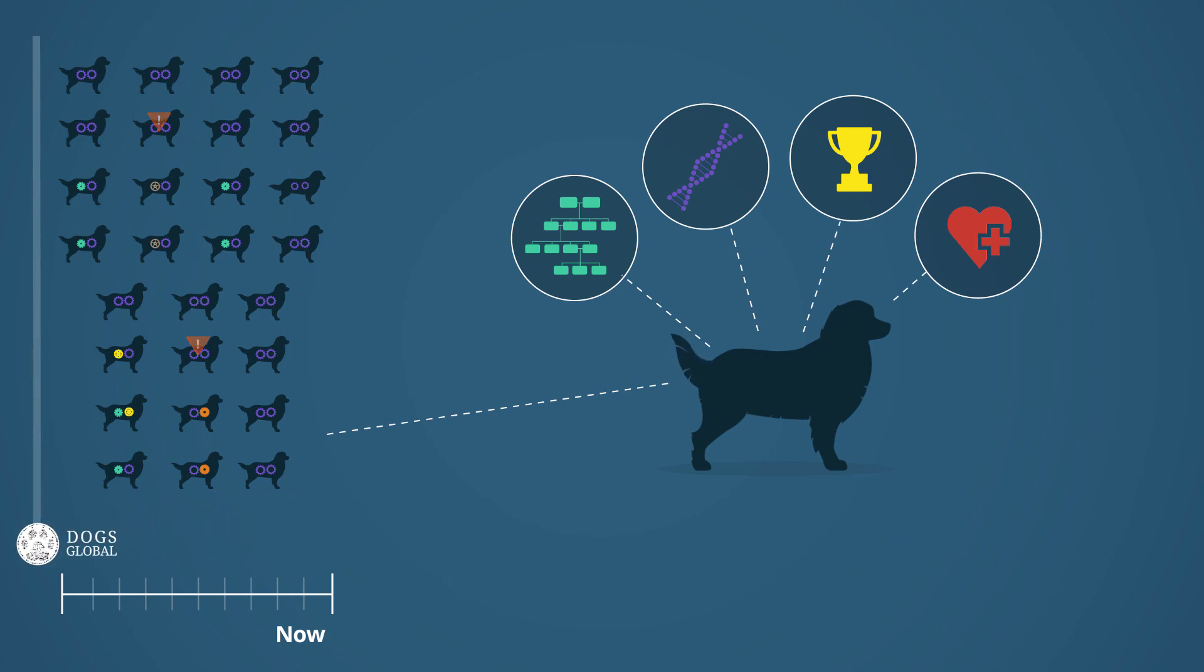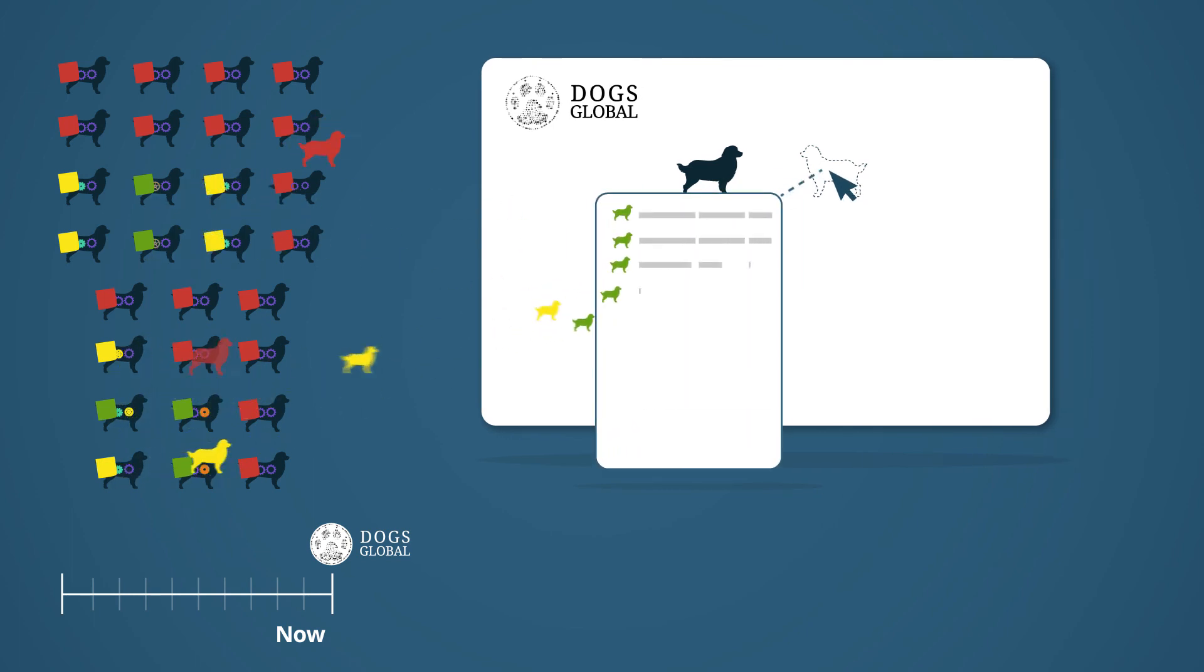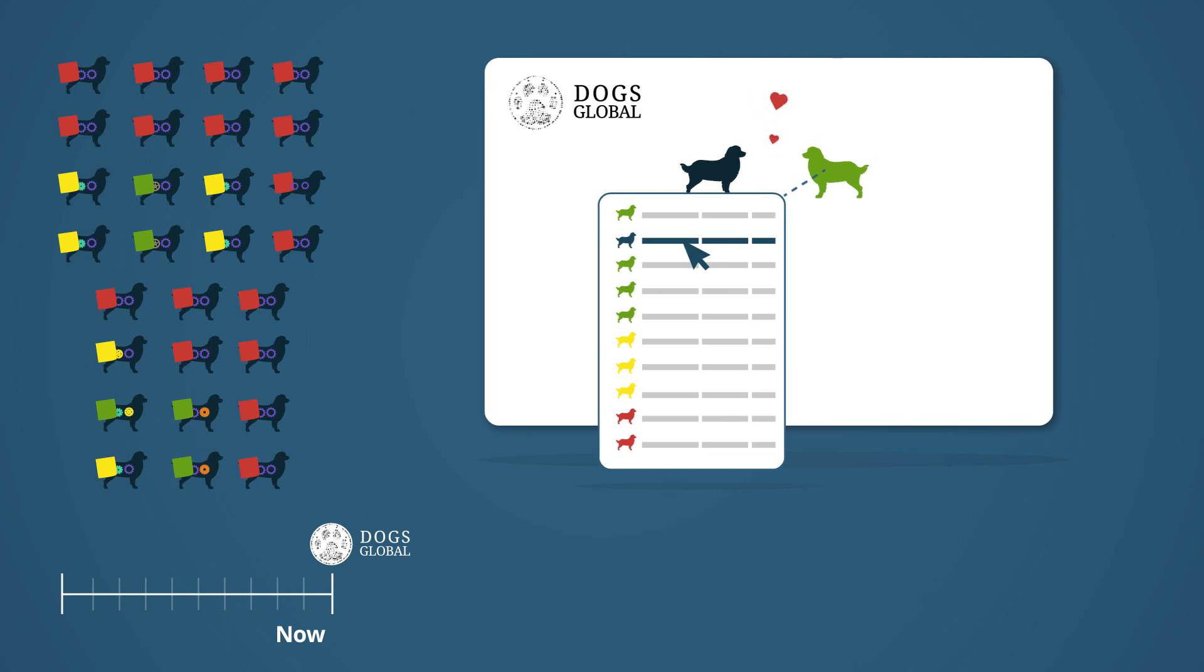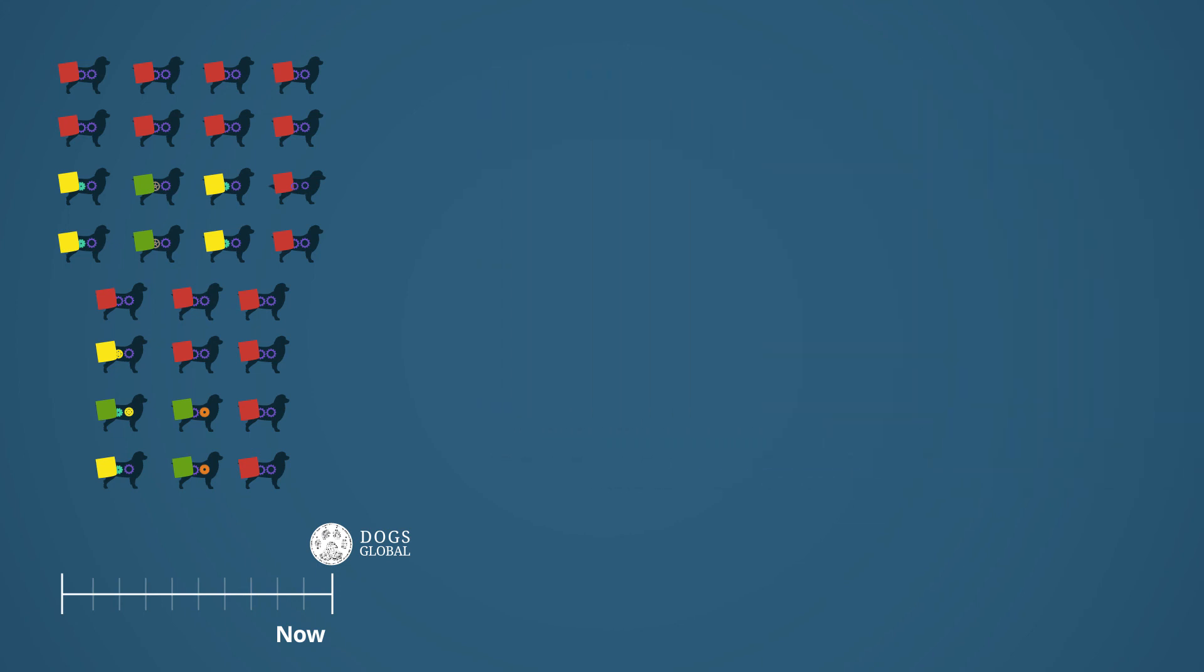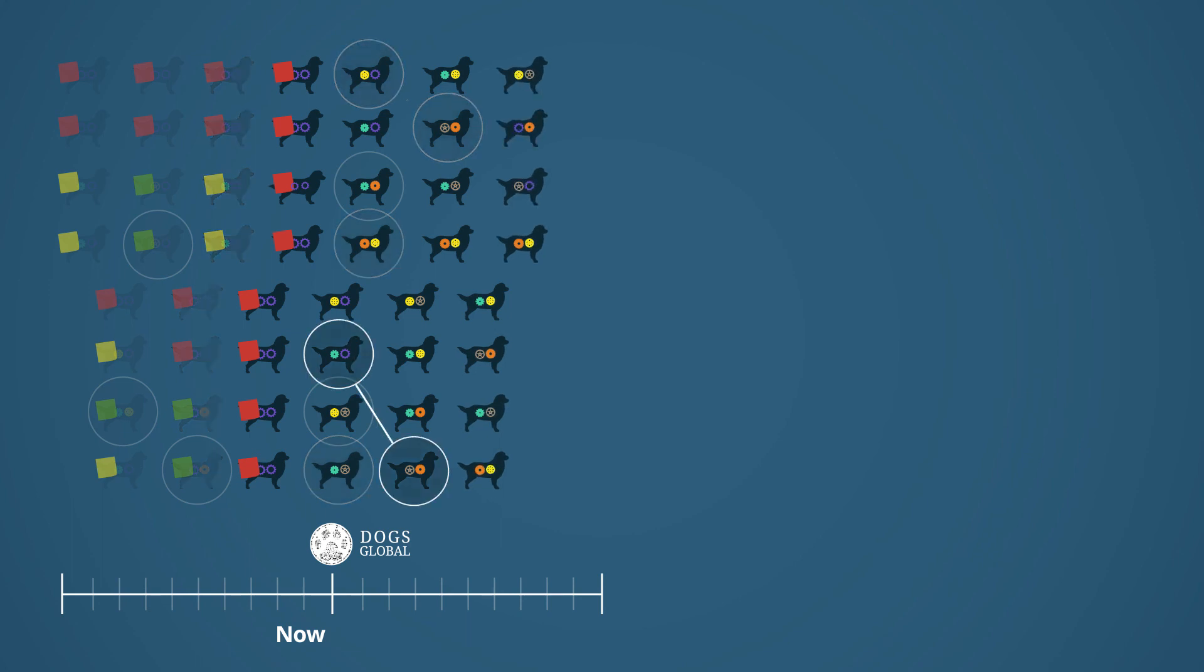Scientific algorithms determine which dogs still carry genes that are unique. Breeders can find suitable dogs within preference lists. This enables them to breed dogs that are exemplary as well as healthy while contributing to the diversity of the breed. Genes that are unique will become more frequent again. The balance within the breed will be restored.